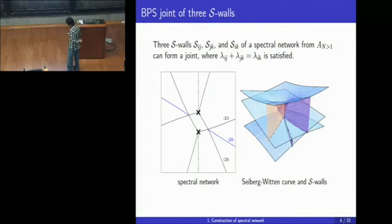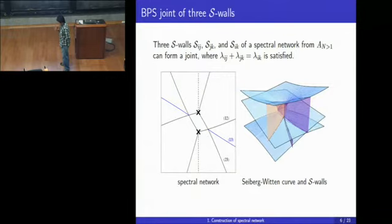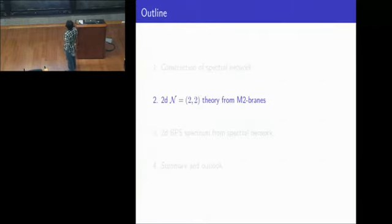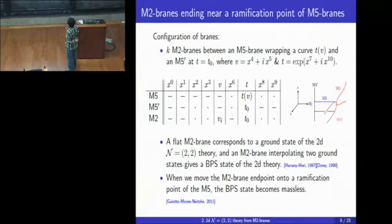To construct a spectral network, we start drawing each s-wall from a branch point, evolve it according to the differential equation, and as they form a joint, we put an additional s-wall from the joint. Then we evolve all s-walls until, in general, they flow to punctures. This is a lightning review of the construction of a spectral network. Now let's see what is the brane configuration that will give us the 2D theory of our interest.